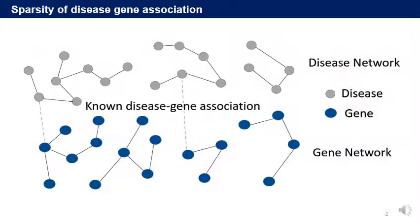Today I'm going to talk about an ensemble of deep and shallow graph convolutional networks for identifying disease-gene association. There is little known gene-disease association compared to the number of candidate genes and diseases. Because of the sparsity of the data, general recommendation system methods cannot solve the above problem. Therefore, we need to use additional information about each gene and disease.